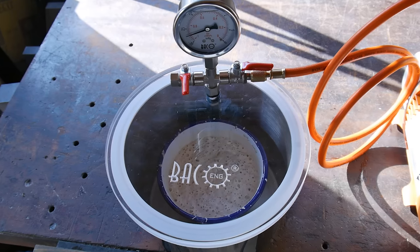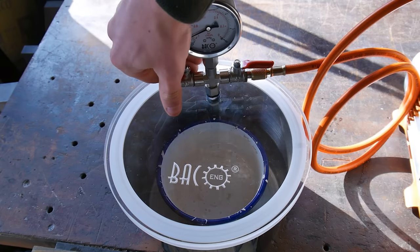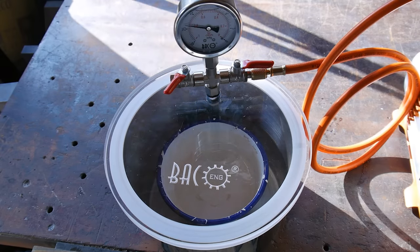The powder and water are mixed together to form the slurry. The mixing process agitates the mixture, which inevitably introduces air bubbles. Therefore, I degas the slurry in a vacuum chamber.